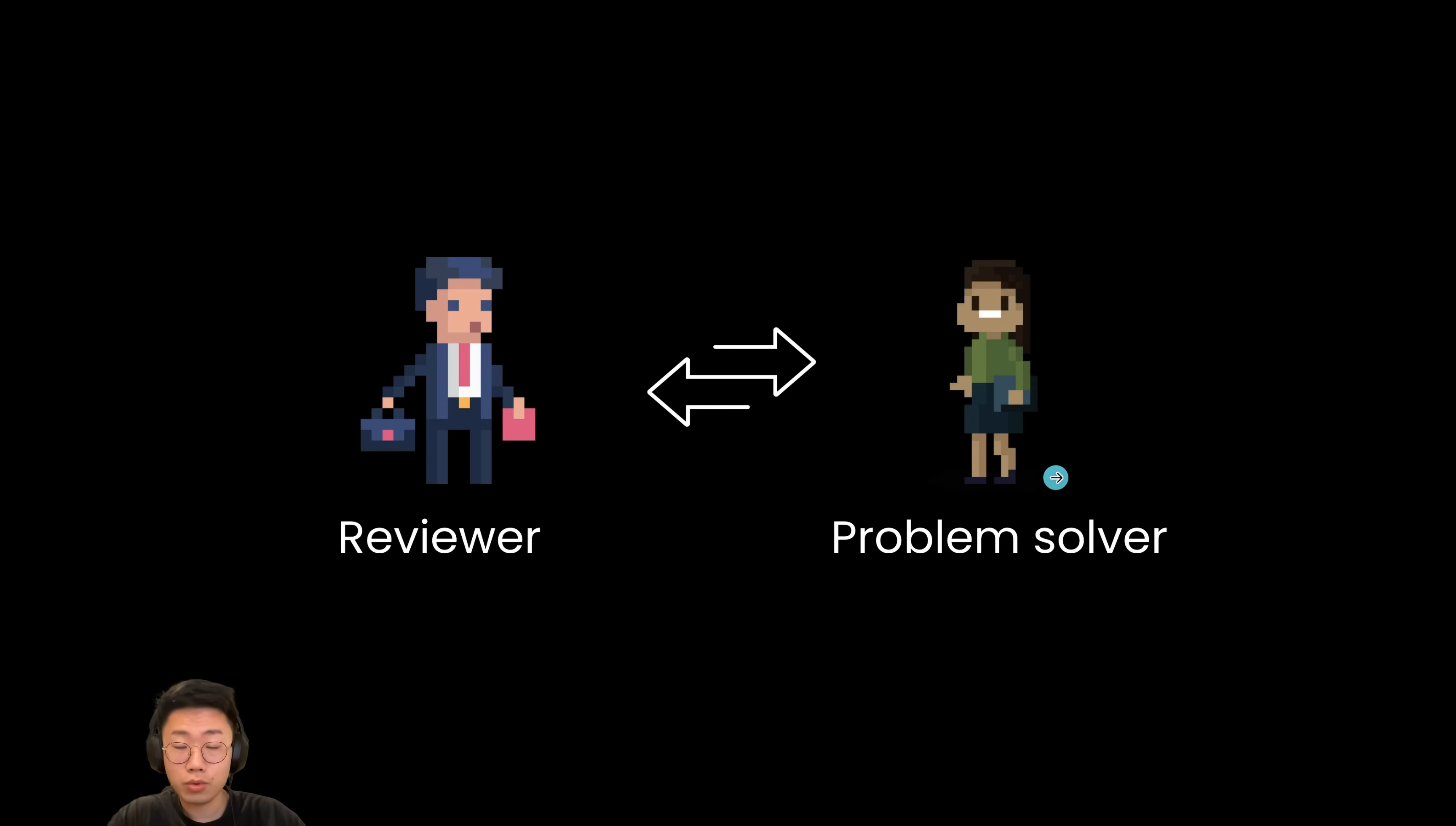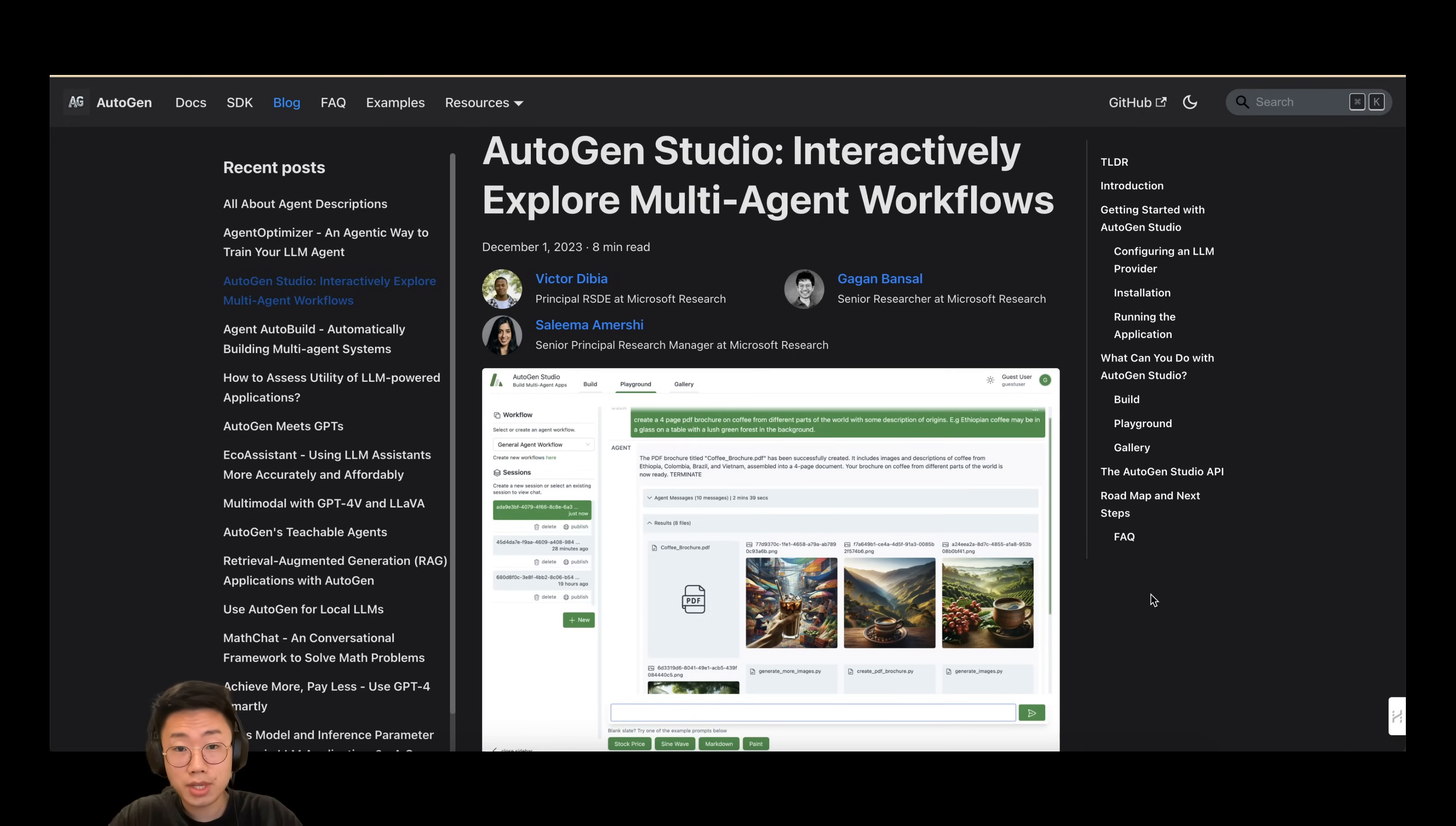One is a problem solver who is actually going to solve the problem. Another is the reviewer who will review the results, identify any flaw in the answer provided by problem solver. And we will set up this communicative agents in Autogen Studio.